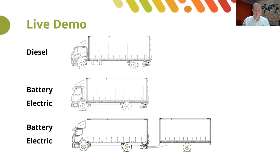To demonstrate how you can use our app to configure a vehicle, I'll take you through a live demo. We'll start with a traditional 4x2 diesel chassis and add a body and some equipment to determine the maximum payload carrying capacity. I will then show you how you can swap the vehicle to a similarly specced battery electric chassis so that we can compare the tare mass and payload for the two different technologies. We'll also add a small pig trailer to see if it is suitable for towing.